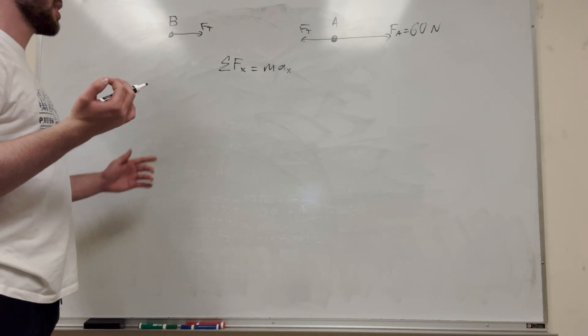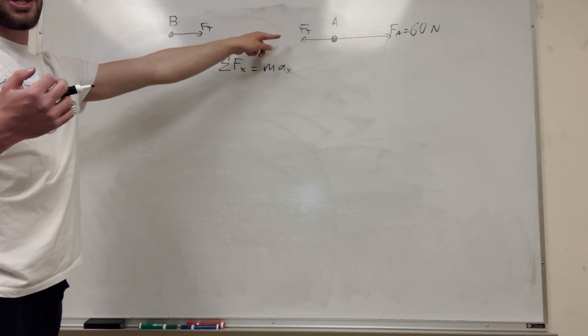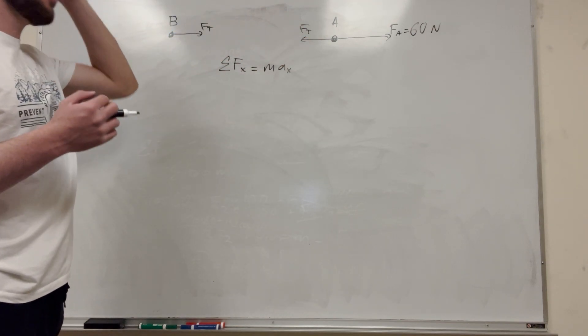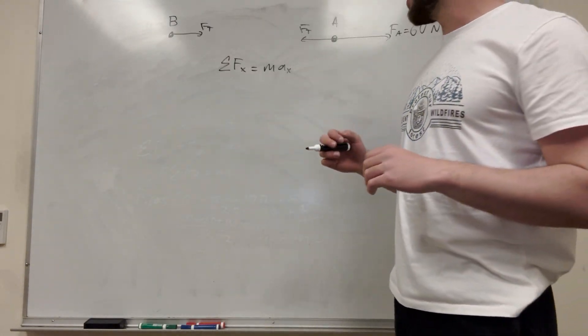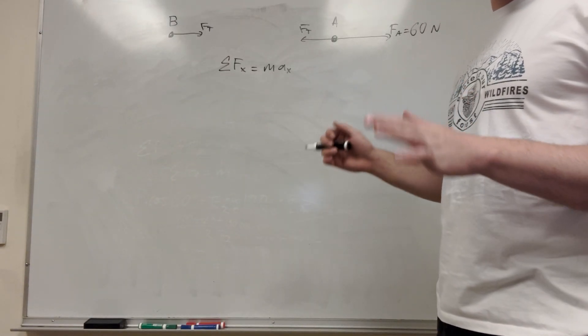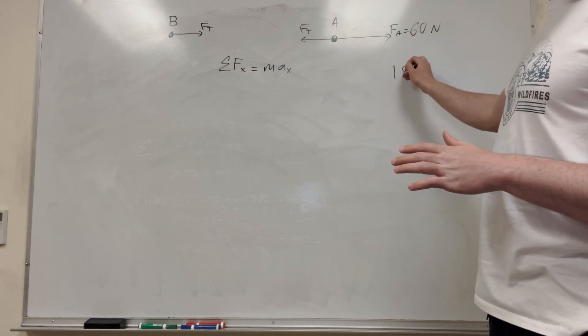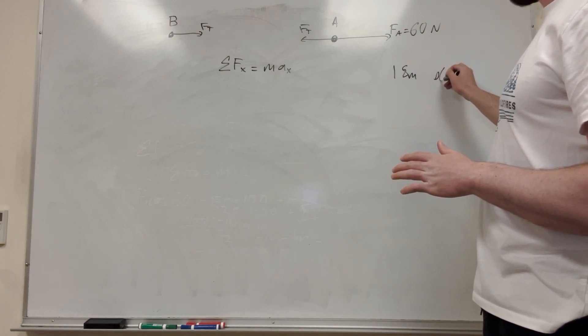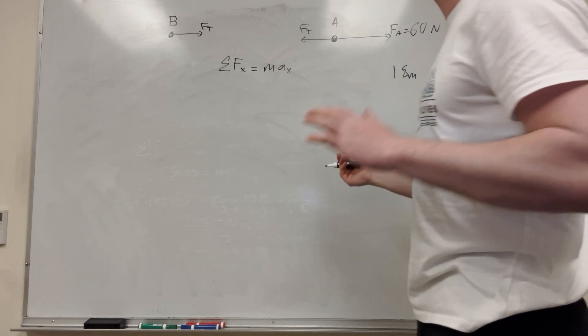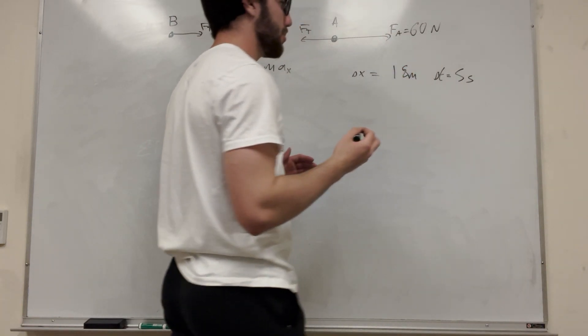So what can we find here? So we can find the forces. We're given force A at 60, and we know the force of tension is what we're trying to find. We have the mass of A. Yes, we do have the mass of A, and then we need to find the acceleration. We need to calculate that. So we're given that the block moves 18 meters in 5 seconds. So this is delta t. Delta t is 5 seconds, that's how much time changed. And delta x is equal to the 18 meters, that's how much it moves.